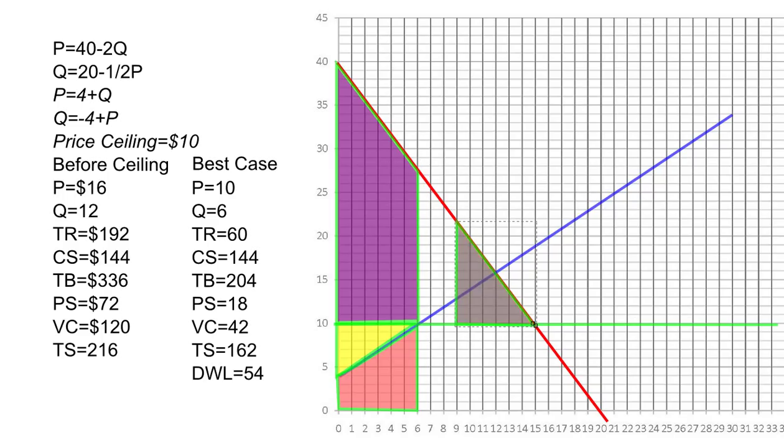What would happen to our total surplus now, and consequently how much would our deadweight loss be? The area of this gray triangle is going to be one-half times the base of 6 (from 9 to 15) times the height from 10 up to 22. So if the 6 units are allocated in the worst possible way and the people who value this good the least got it, then the consumer surplus would be one-half times 6 times 12. That worst case consumer surplus is only $36.